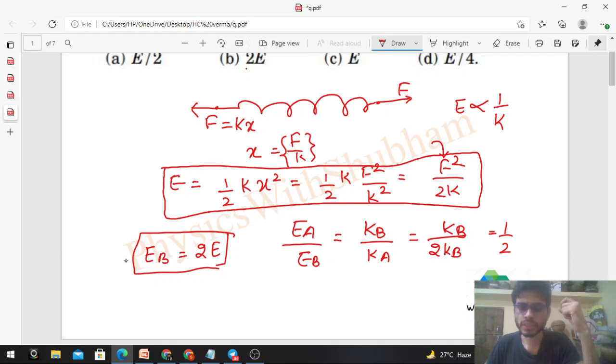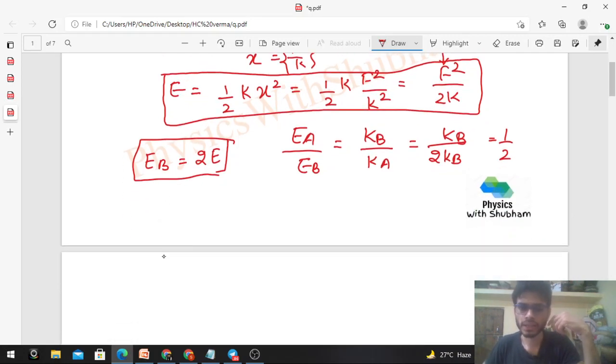make equal elastic potential energy of the two springs. Hum dono spring me kitna force apply karna hai? In other words, find out the ratio of the forces applied in the two springs so that elastic potential energy of the springs are same. Dono me jo elastic potential energy hai wo same rehna hai, same hona chahiye. Toh uske liye hume kitna force apply karna padega aur ratio of the forces nikalna hai. So agar energy hum same consider karte hai, then FA square upon twice of KA, that will be equal to FB square upon twice of KB.